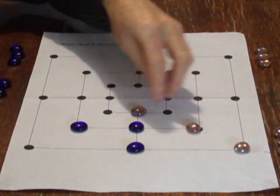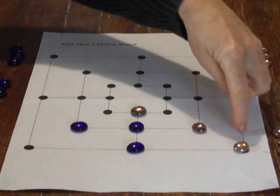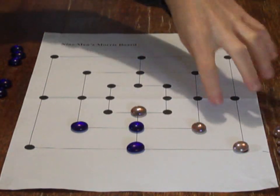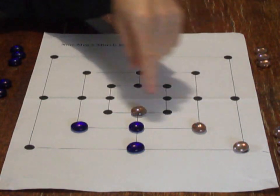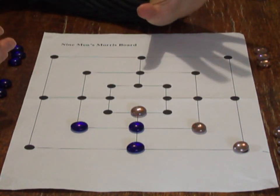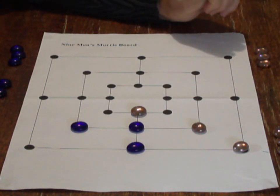So, these diagonal formations like this do not count. It must be three pieces along any of the lines. So, the inner lines or the outer lines. The three pieces in a row is actually called a mill. Okay, and making mills is a key part of the game, especially once all your pieces are on the board.